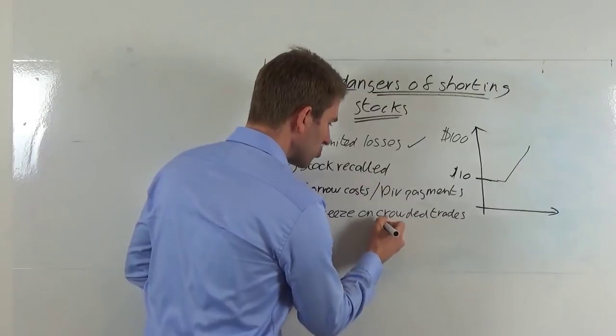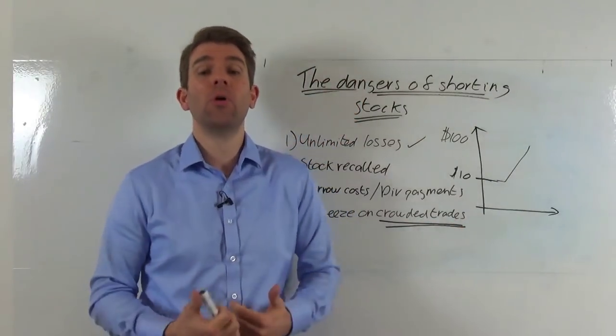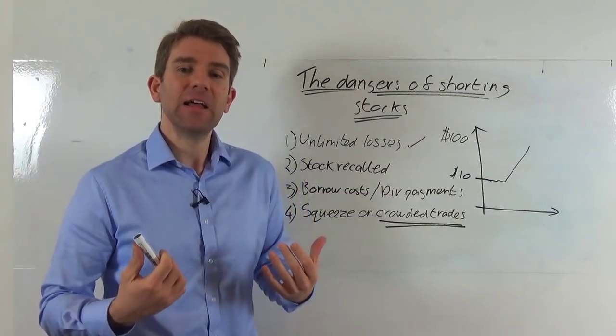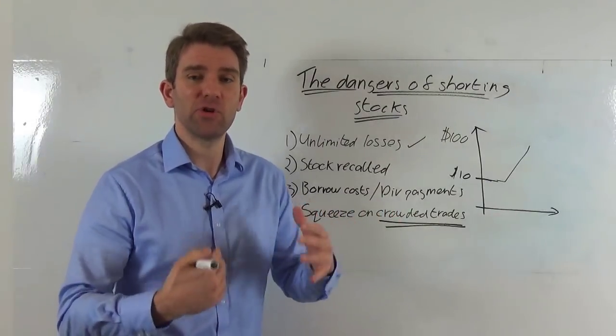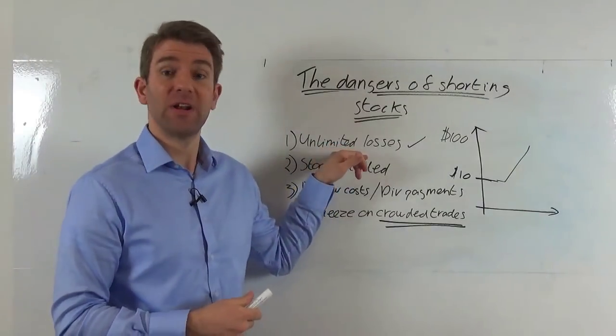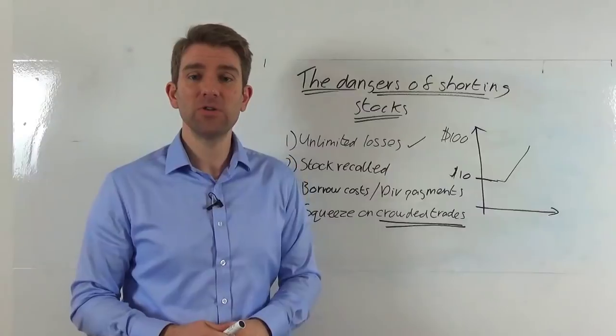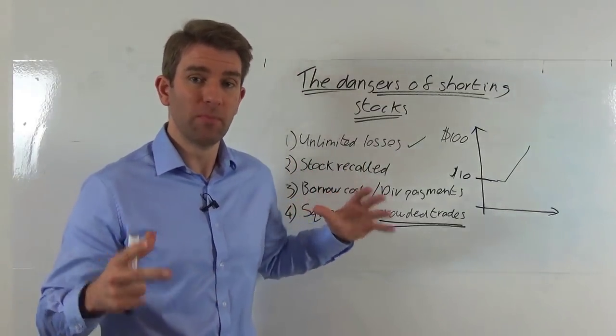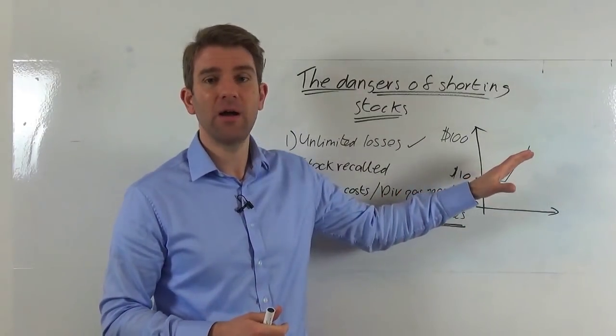If this short trade is crowded, and often they do get crowded because the fundamentals look poor, whatever it is, a lot of people are going short, a lot of people are aggressively selling it, then everyone else in the industry is aware that there's a crowded short trade. Everyone also is aware that your losses are unlimited. So how do you hurt those people and get those people to, how do you get the price to go higher?